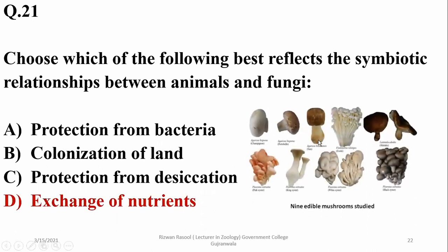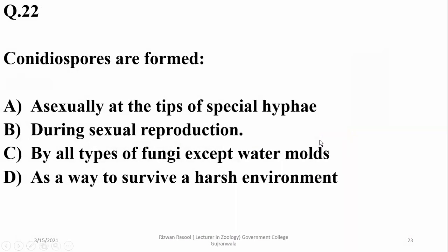As you can see, there are different edible species of fungi which provide nutrition to the animals as well as humans. So conidiospores are formed by asexual reproduction at the tips of special hyphae known as conidiophores.